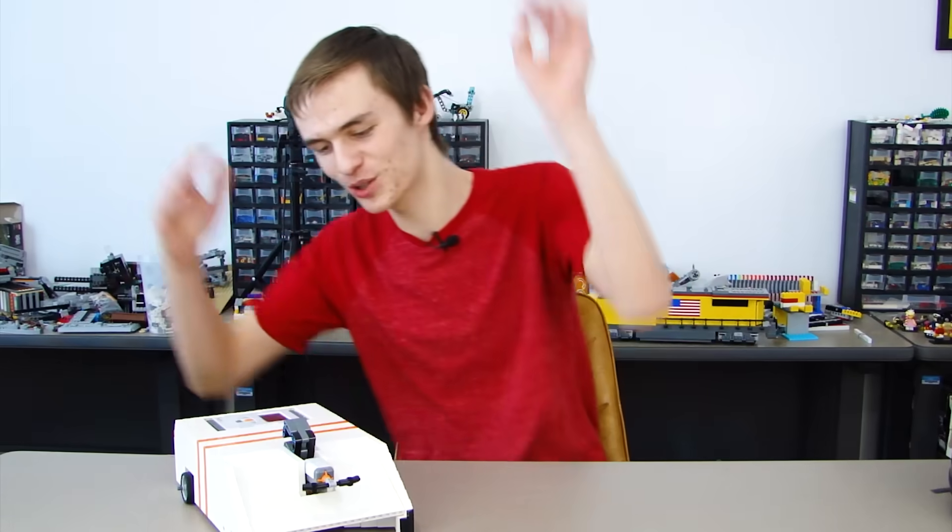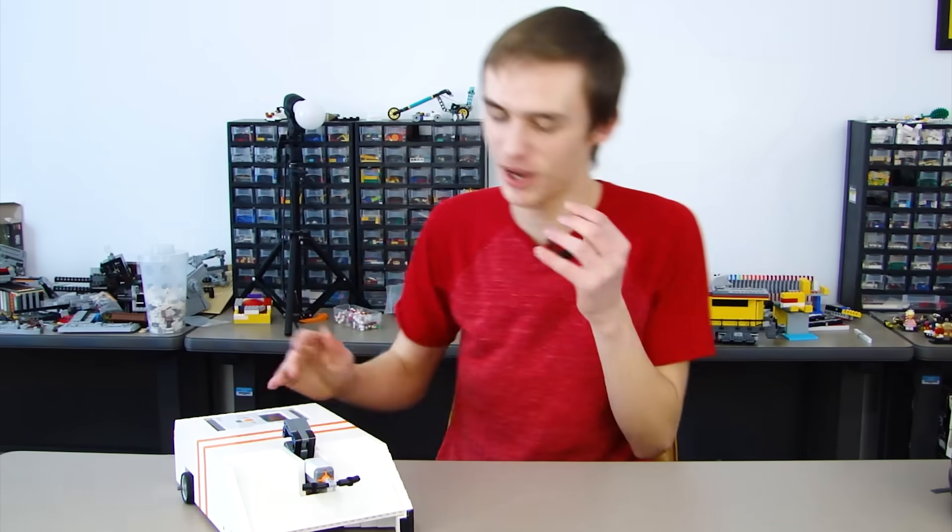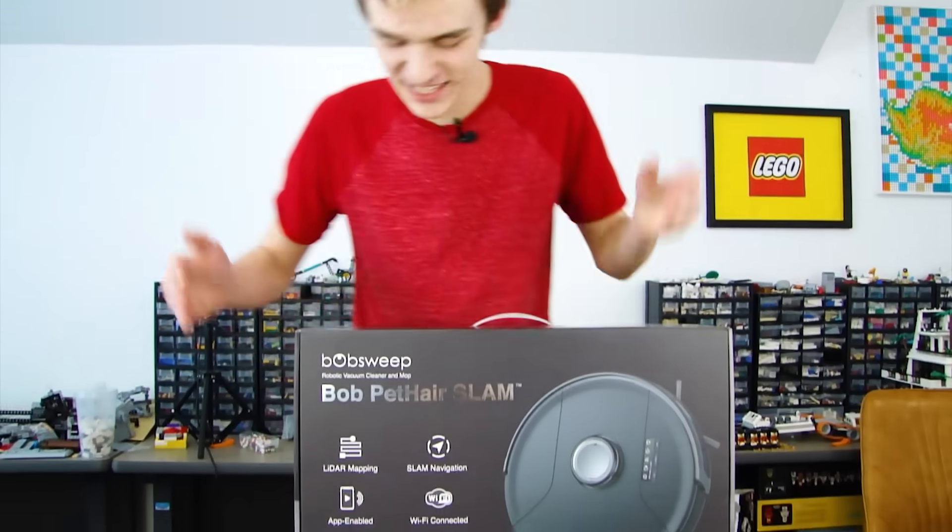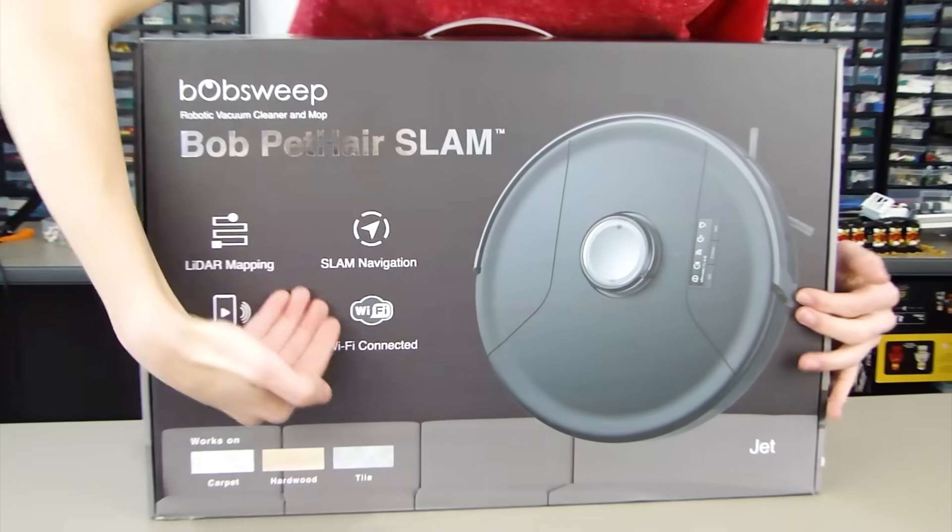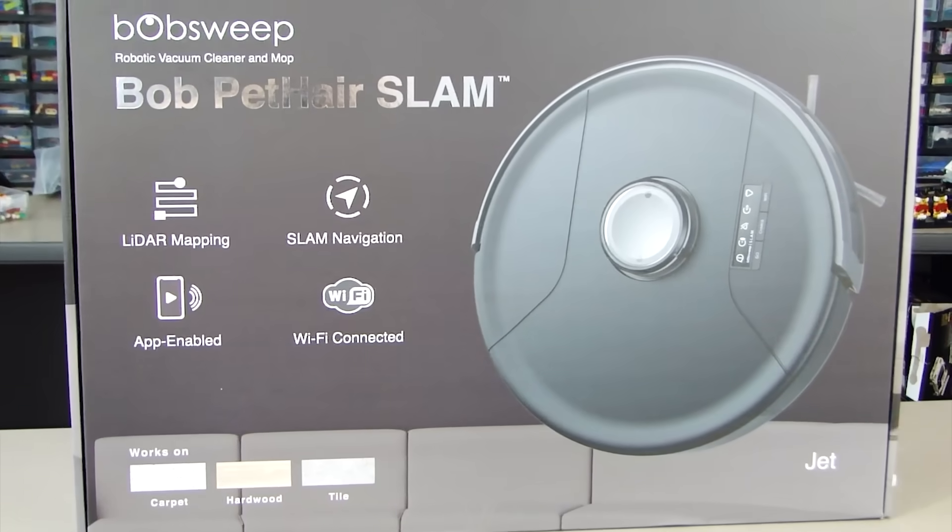So let's meet the competitors. There's the Lego robot vacuum. I completely made it out of Lego, 100% Lego. Then we have this. This thing is insane. The Bob Pet Hair Slam. It has so many more features than just my Lego one. Like look at all this stuff. Wi-Fi, app enabled. It's got everything. It's got mapping.